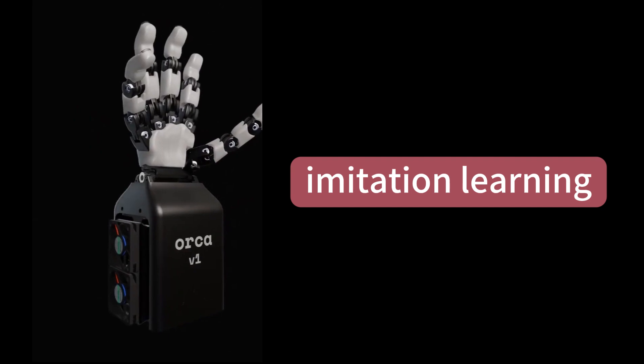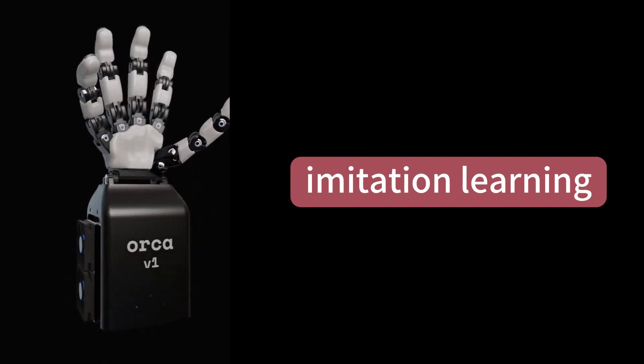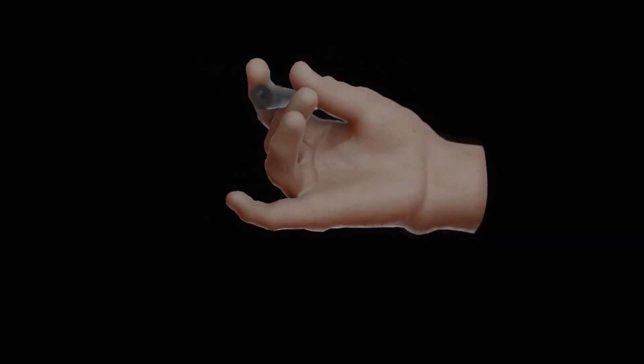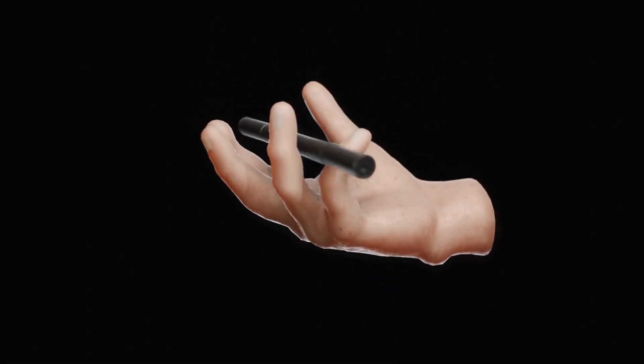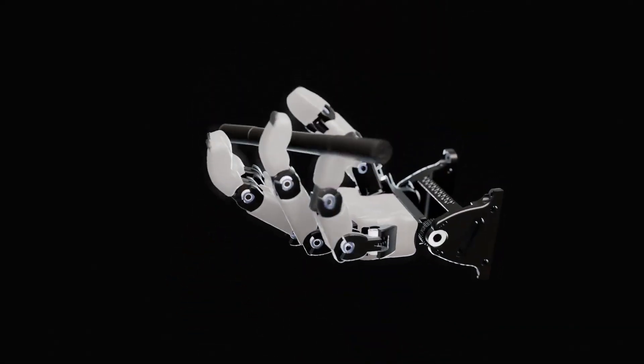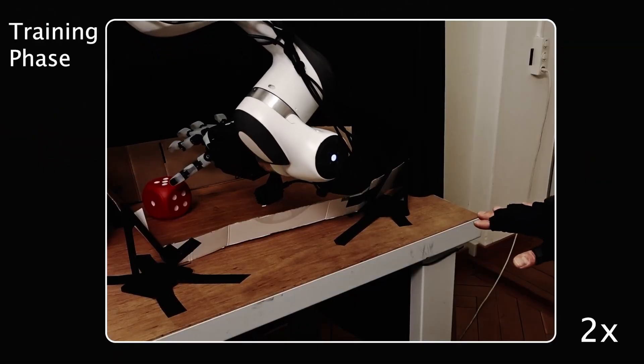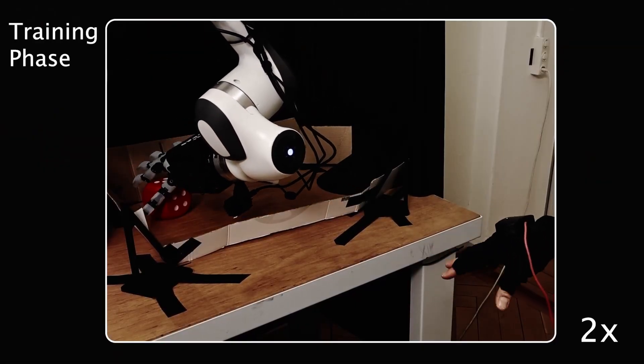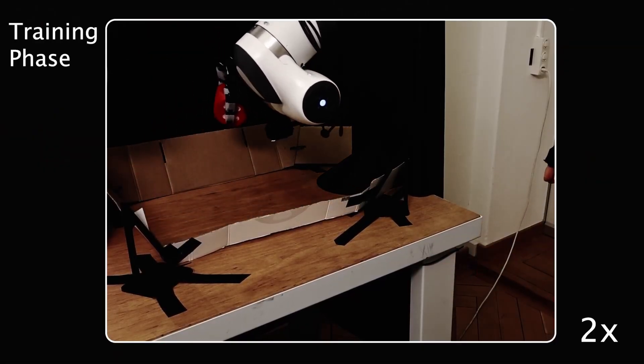Beyond reinforcement learning, the Orca hand also excels at imitation learning. The team collected 2.5 hours of human grasp and place demonstrations using motion capture to track wrist and finger joint angles. Based on this dataset, they trained imitation policies using a diffusion model, which is known for strong generalization.